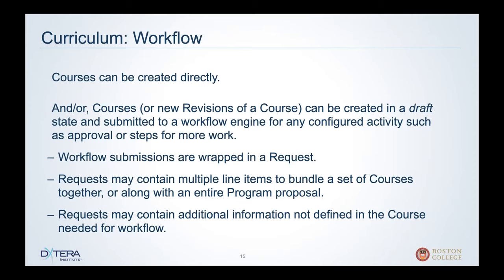In course proposals, all workflow submissions are wrapped in a request — a course proposal request. These course proposals may contain multiple line items, so the capability exists for multiple courses to be bundled together so that somebody is reviewing and approving the entire set of courses rather than seeing them come in one at a time. Or it may be wrapped in the same request that's part of a program proposal — where a committee came up with a bunch of courses and you should see the whole thing before approving it for offering. These requests may also contain justifications and other information to let people participating in the workflow know what to do.